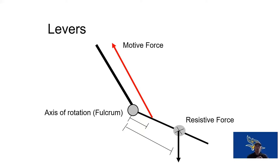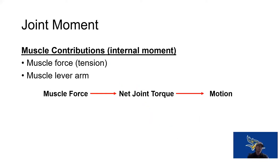Here's a quick review: if the resistive force is furthest away and the motive force is in the middle, it's a third class lever. If resistance is in the middle, it's a second class lever. If the axis is in the middle, it's a first class lever. That's how we run through ARM — Axis, Resistance, Motive — to identify lever class. Muscles contribute a force that creates torque, and that torque can cause or resist motion.